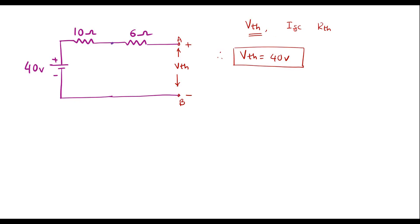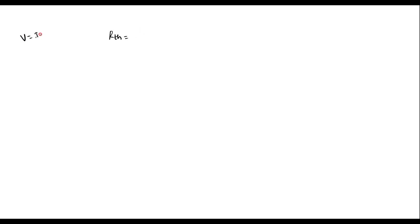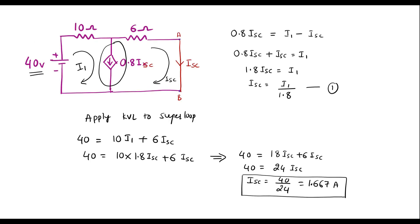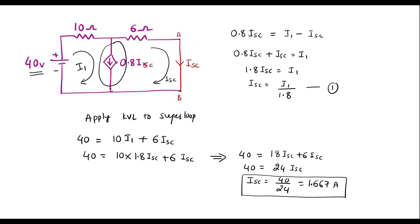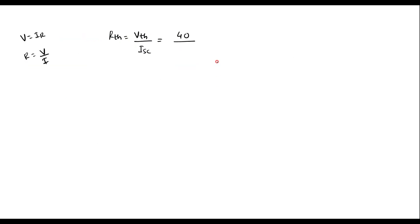We have found Vth and ISC. Now we calculate Rth. Since V equals IR, Rth equals V divided by I, that is Rth equals Vth divided by ISC. Vth is 40 volts and ISC is 1.667 amps. Therefore, Rth equals 40 divided by 1.667, which gives Rth equal to 24 ohms.